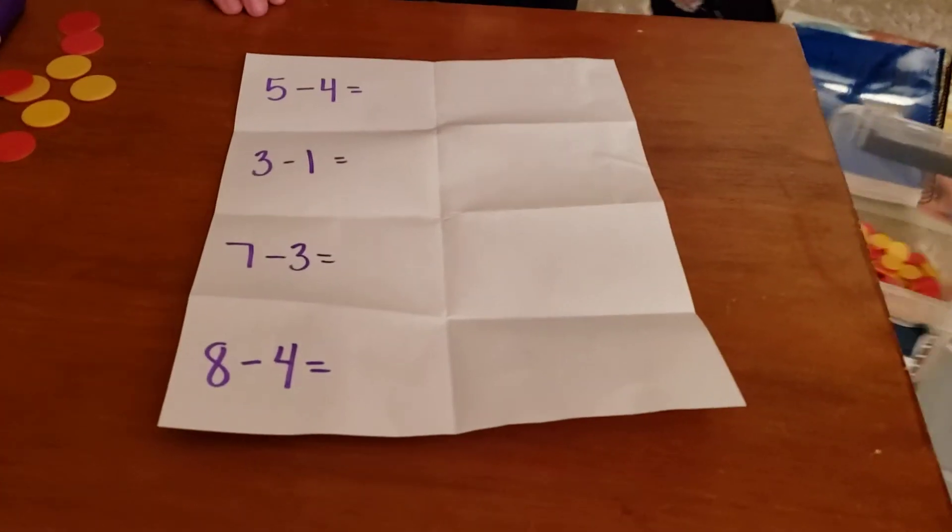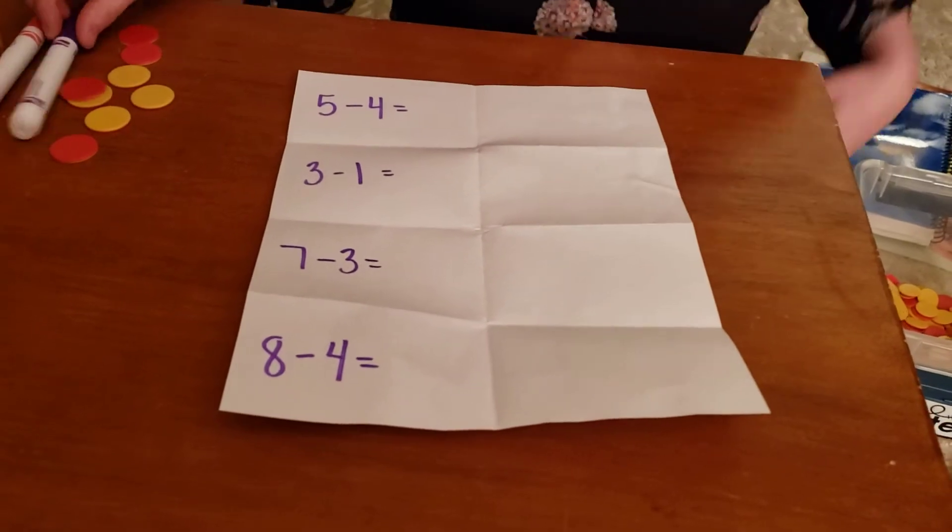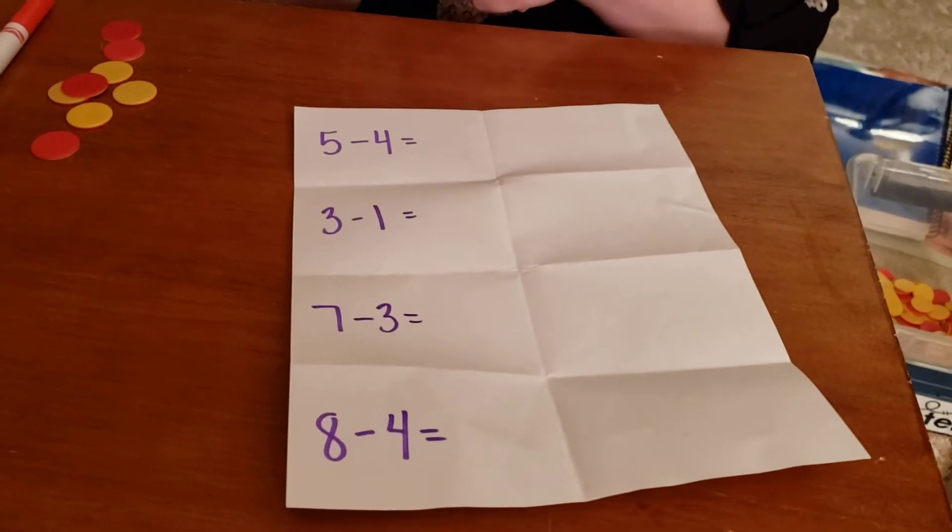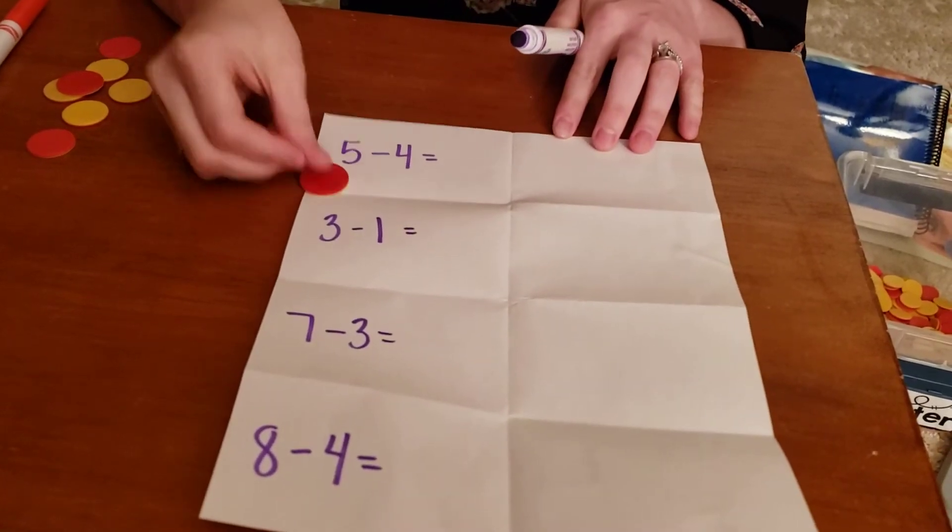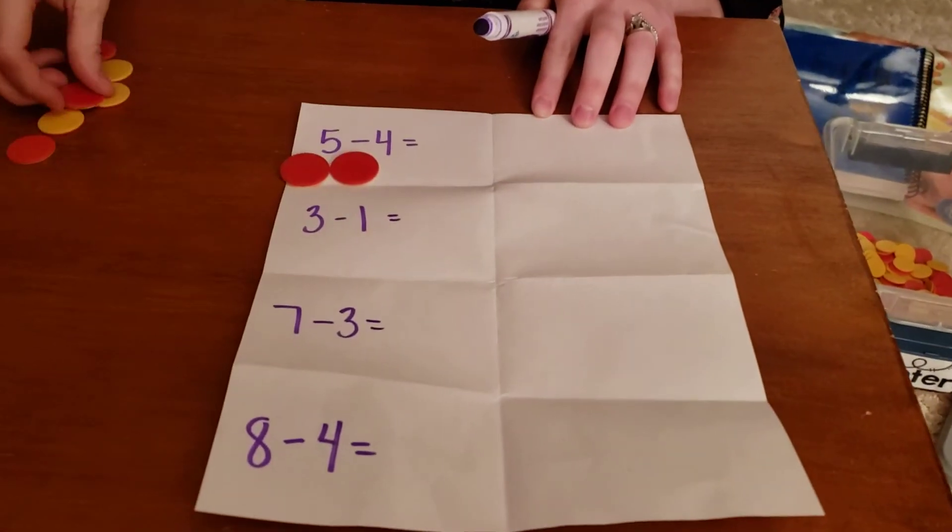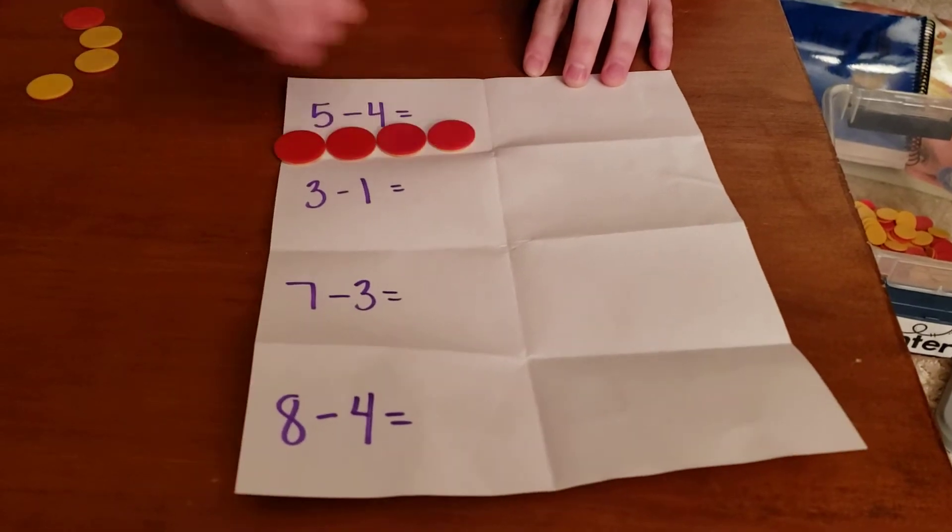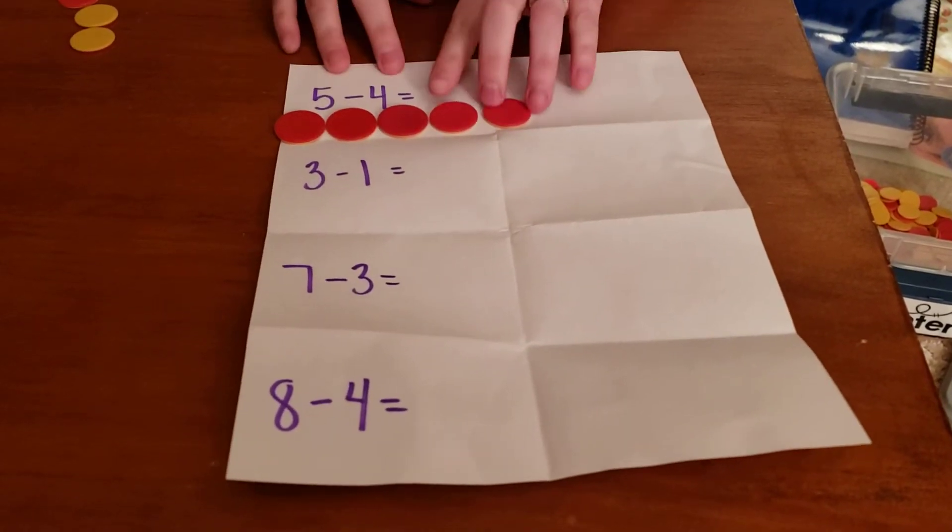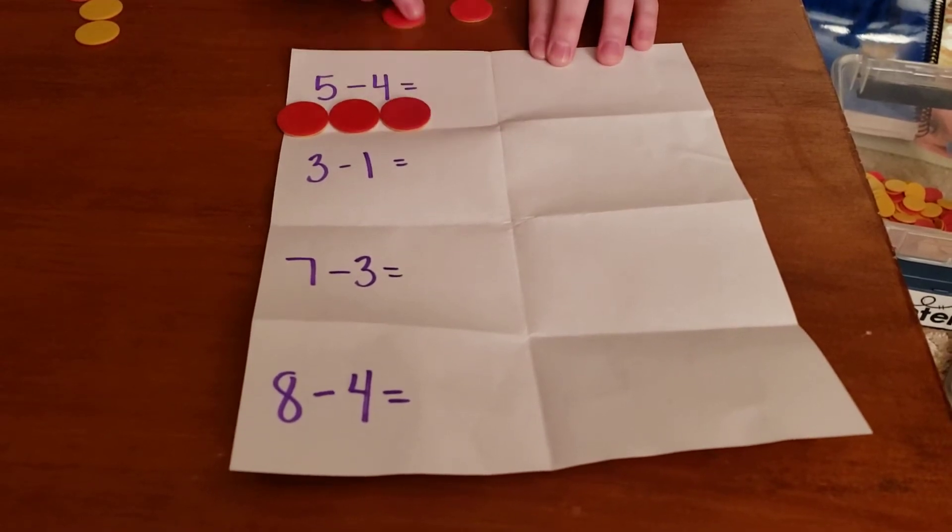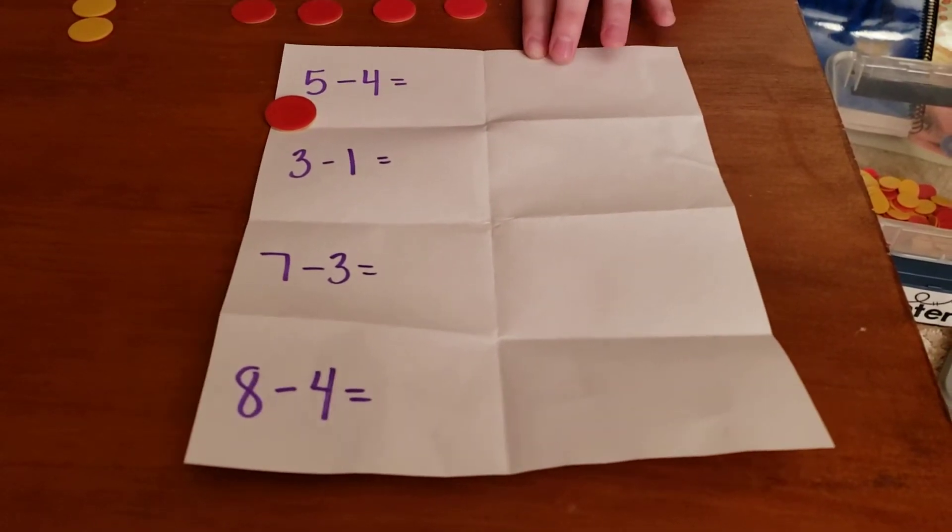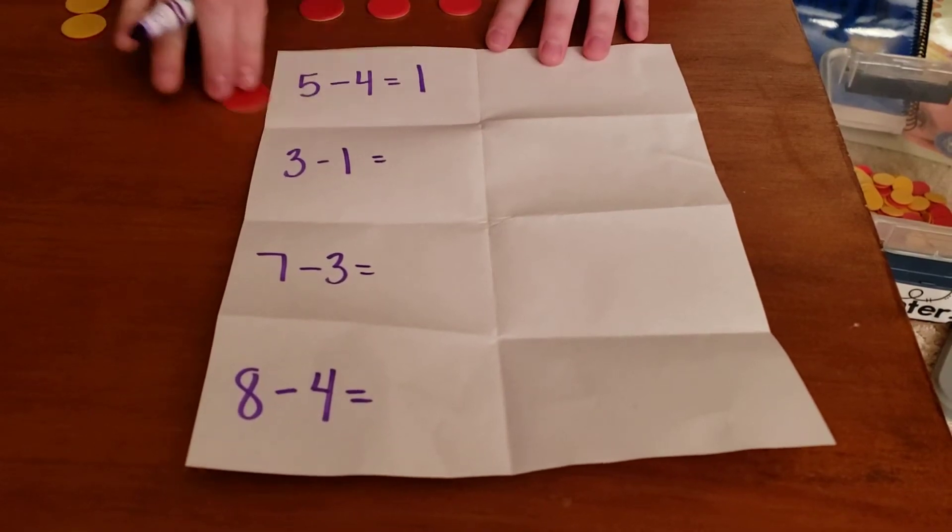All right, let's practice some subtraction number sentences. First, Mrs. Quist has five minus four. So I need five counters. One, two, three, four, five counters. I need to take away four of them. One, two, three, four. How many are left? One. Good job.